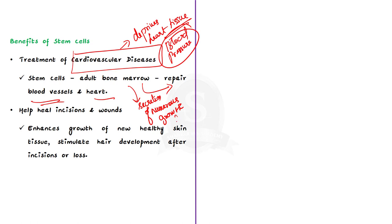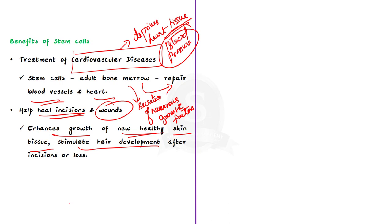Coming to the second benefit: stem cell therapy can help heal incisions and wounds caused in our body. Studies have discovered that stem cell therapy can help enhance the growth of new healthy skin tissue, stimulate hair development after incisions or loss, and help substitute scar tissue with newly developed healthy tissue. So, these are some of the present uses of stem cell therapy.